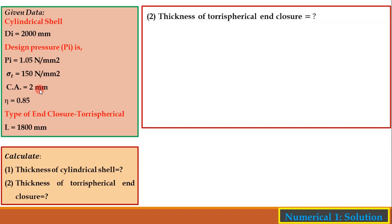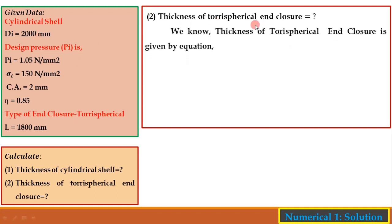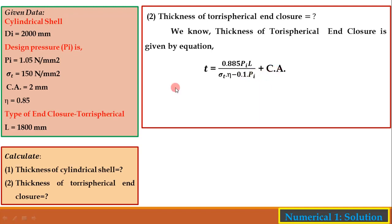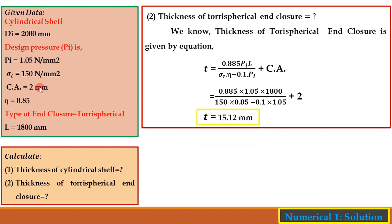Part 2 — Thickness of torispherical enclosure. The formula is: t = (0.885 × pi × L) / (sigma_t × eta − 0.1 × pi) + CA. Here, L = 1800 mm, pi = 1.05 N/mm², sigma_t = 150 N/mm², eta = 0.85, CA = 2 mm. The calculated thickness of the torispherical enclosure is 15.12 mm.